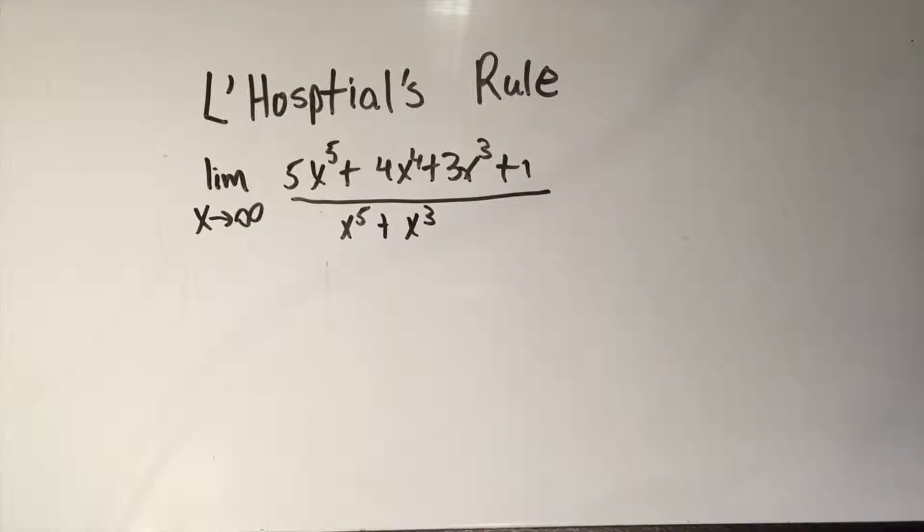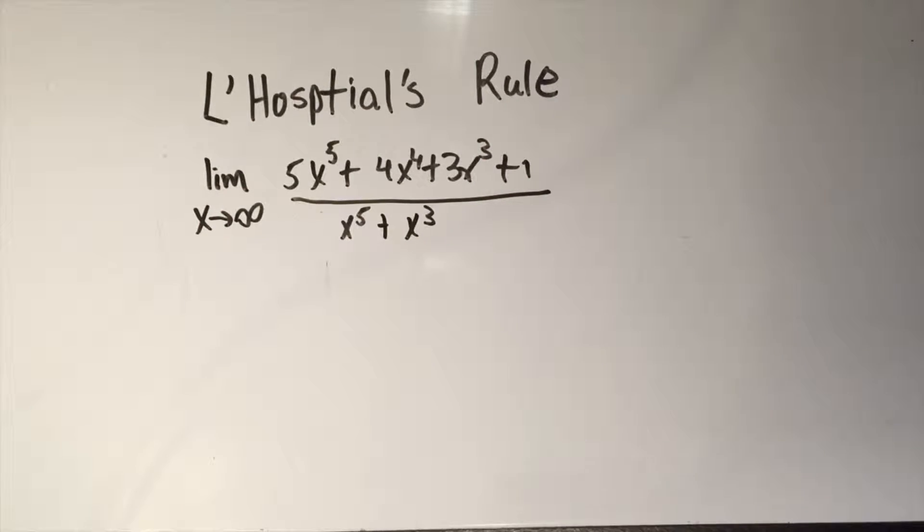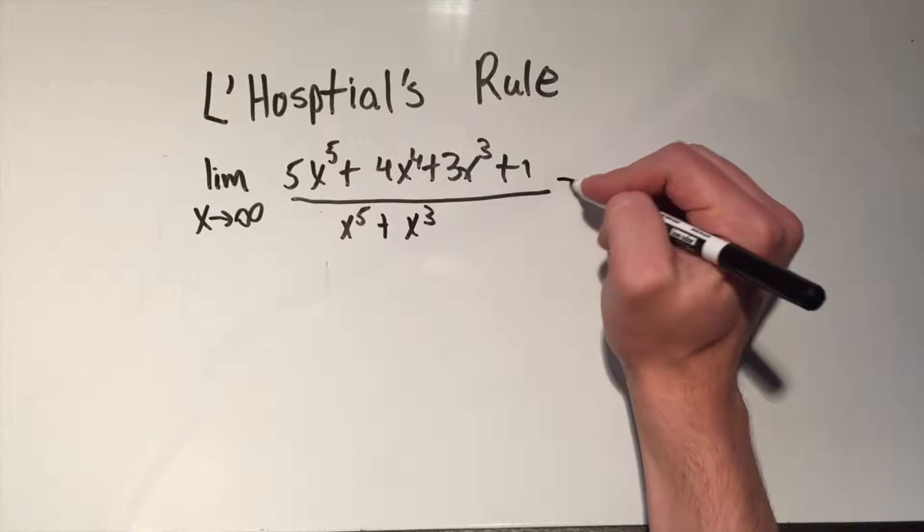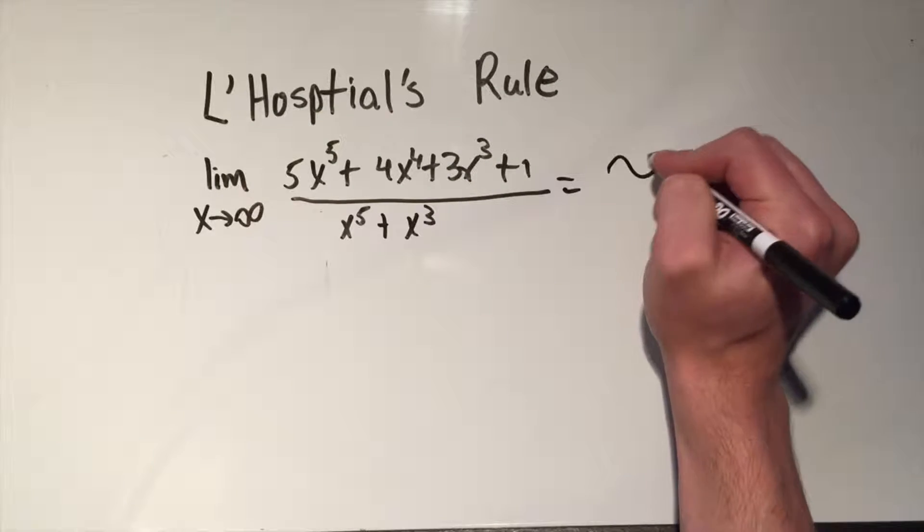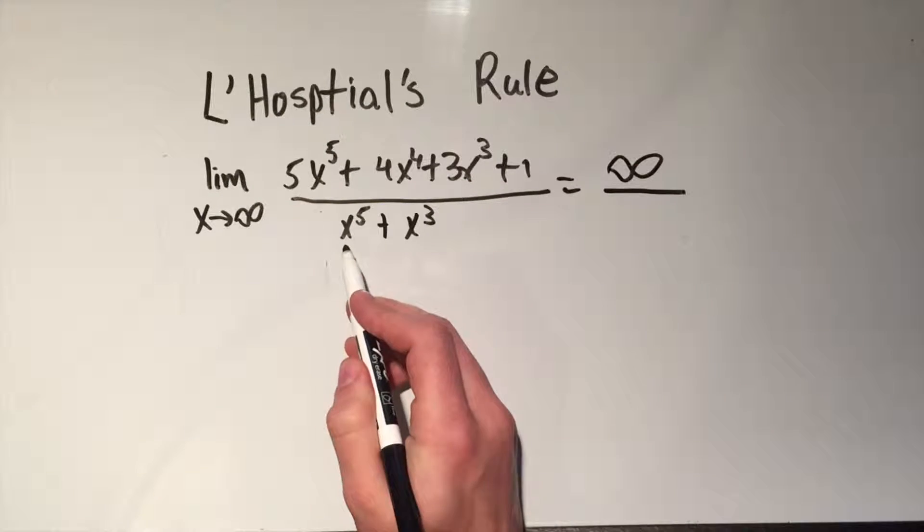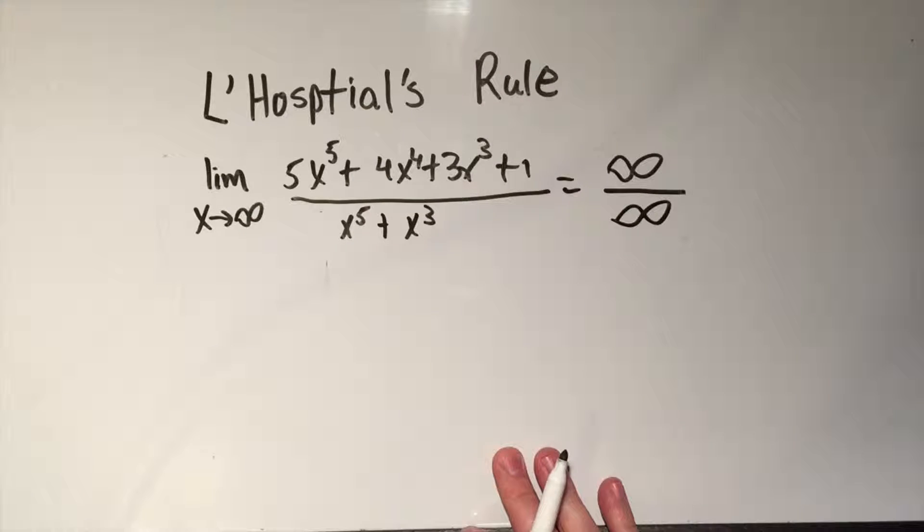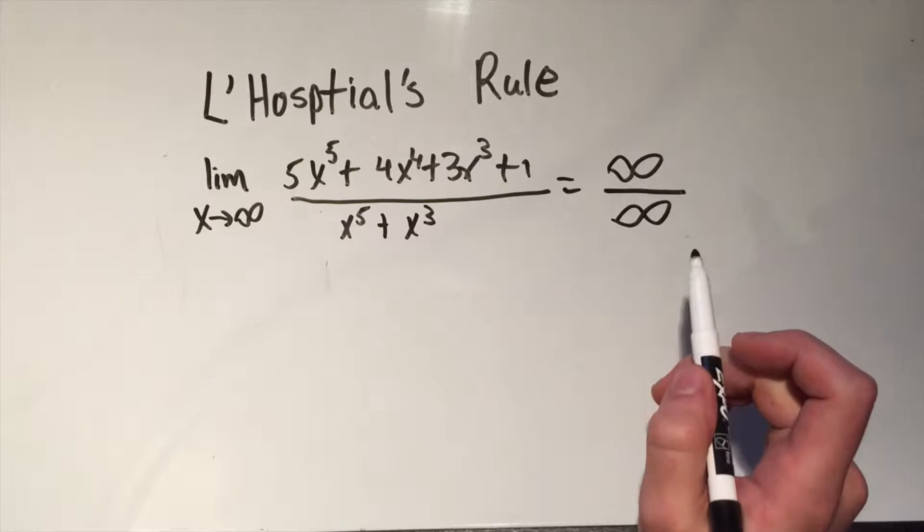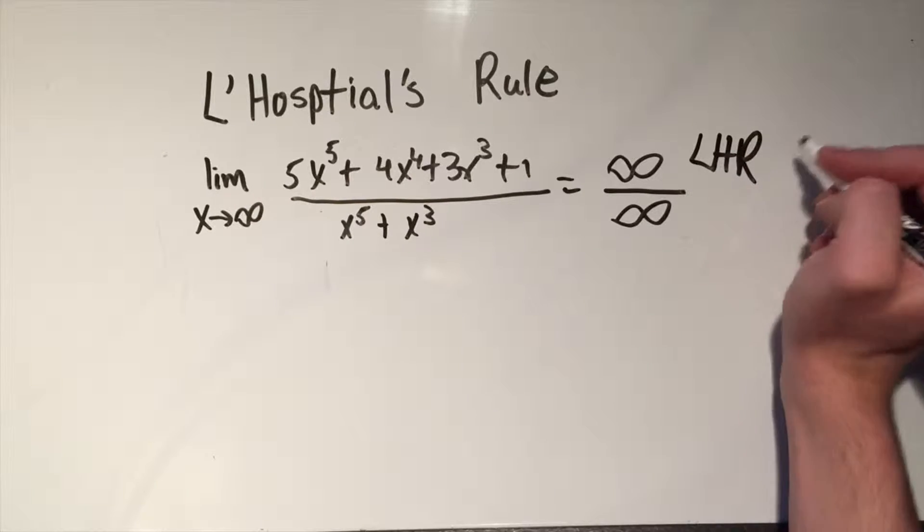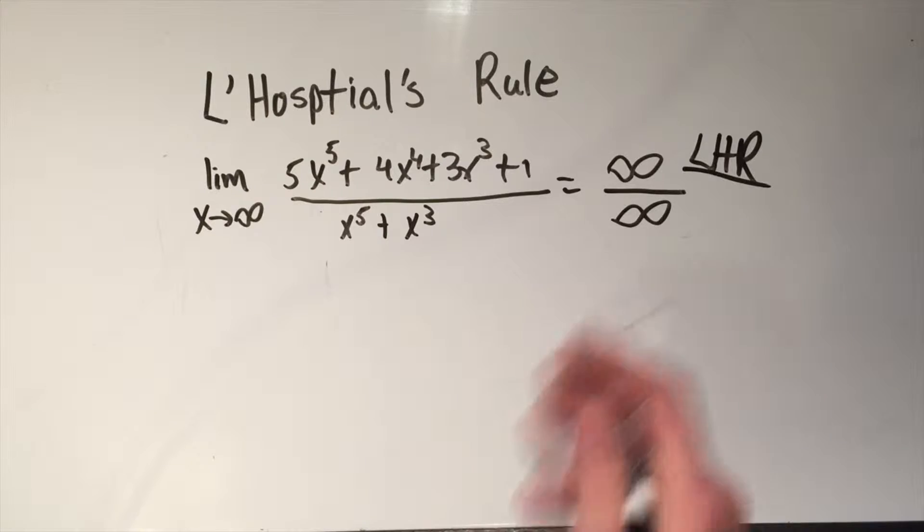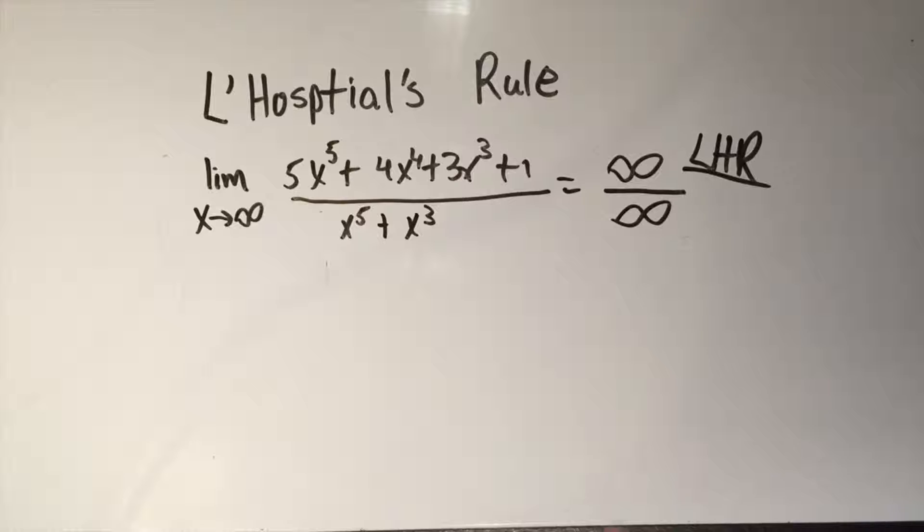So let me try to take this limit. And I always say plug it in. You can't really plug in infinity, but you're basically plugging in infinity. Well, infinity to the 5th plus infinity to the 4th plus infinity cubed is definitely infinity. And infinity to the 5th plus infinity cubed is also infinity. Hey, I got infinity over infinity. That means I can use L'Hospital's rule. And sometimes they do that. They say LHR. So this is me signifying that I'm going to do L'Hospital's rule right here.